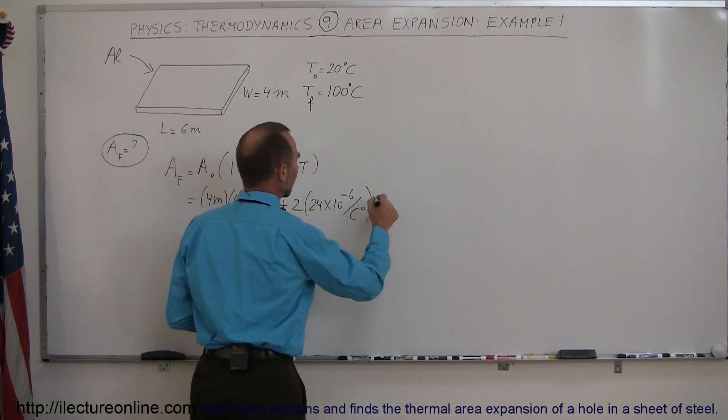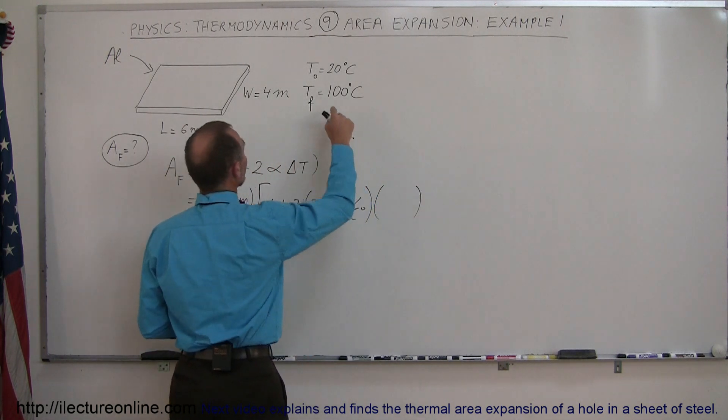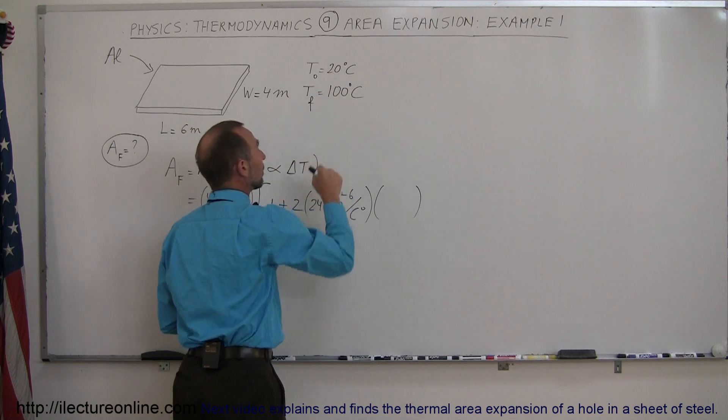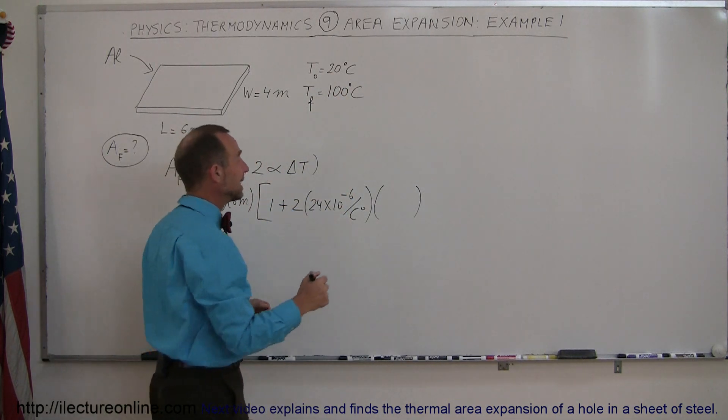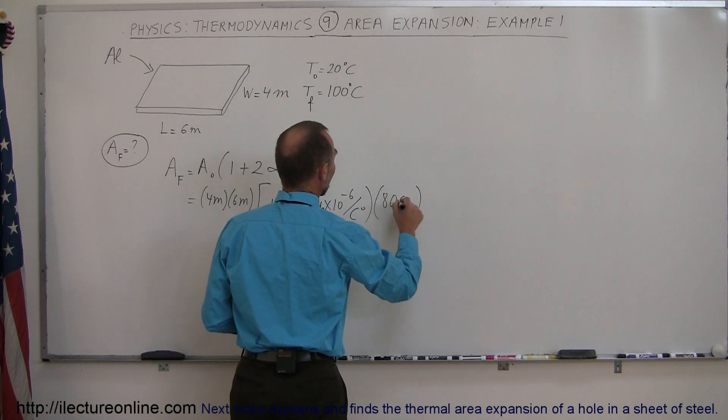And then we'll multiply times the change in temperature. Now we went from 20 degrees centigrade to 100 degrees centigrade, so that's a change of 80, so that's 80 centigrade degrees.